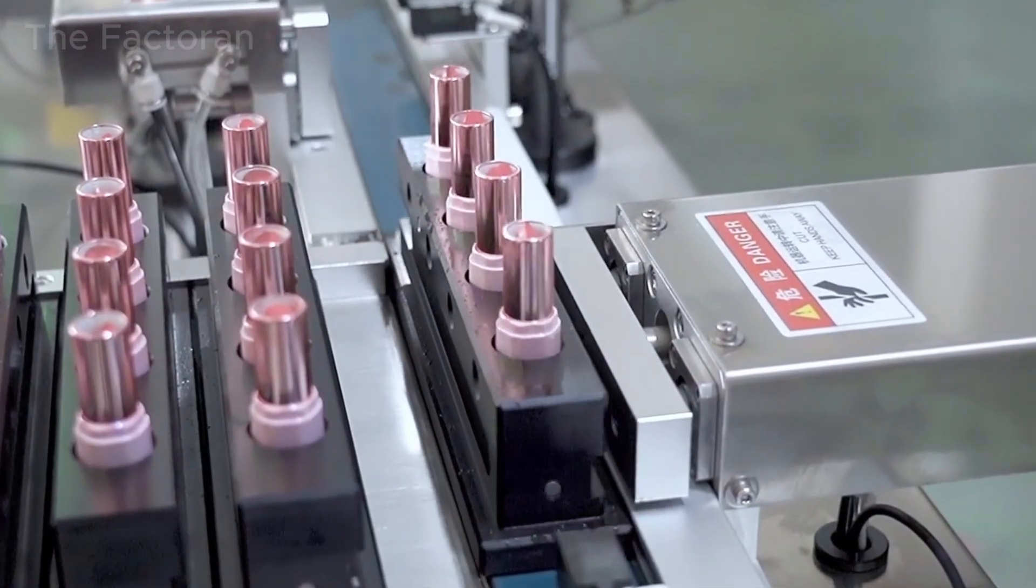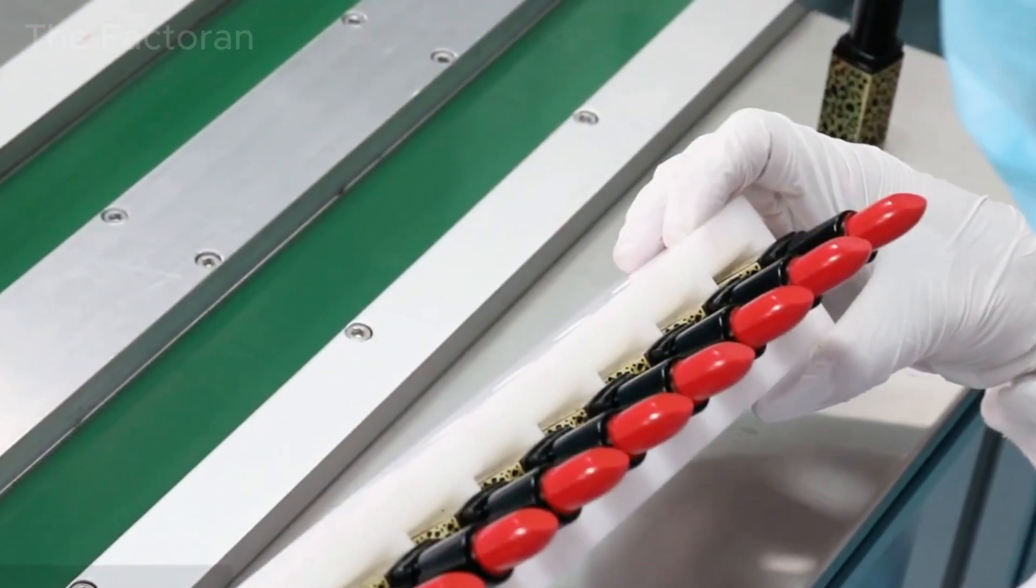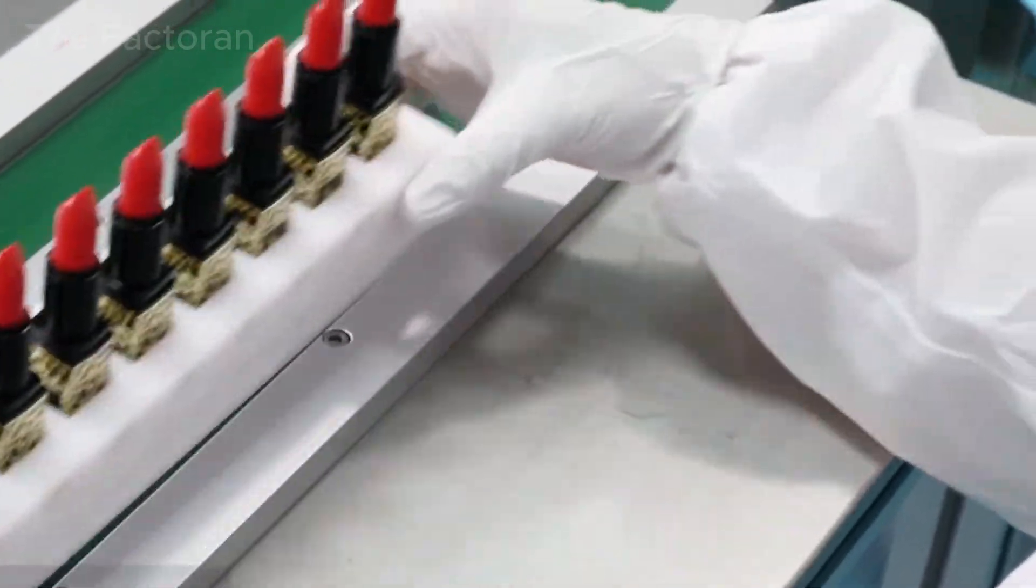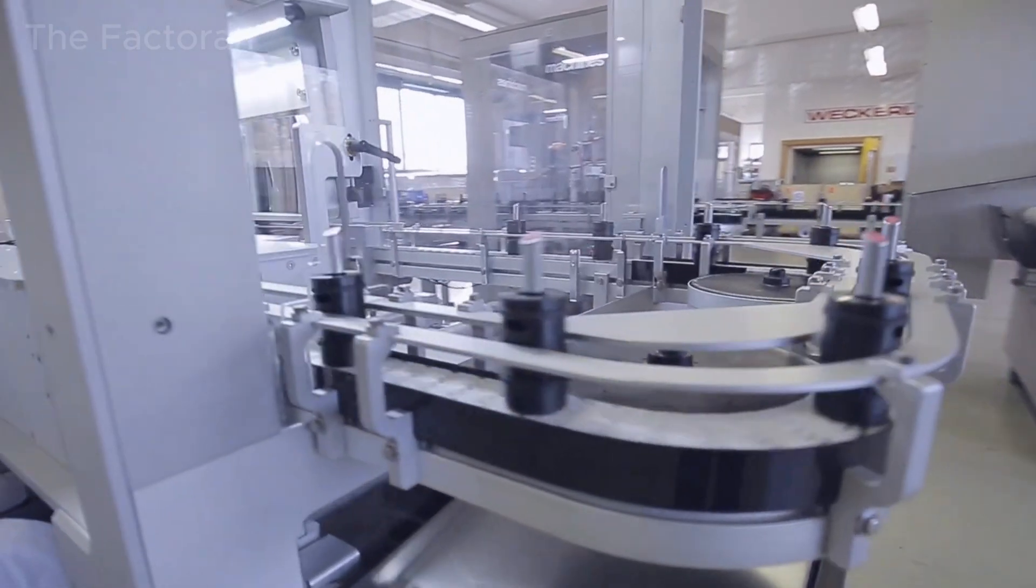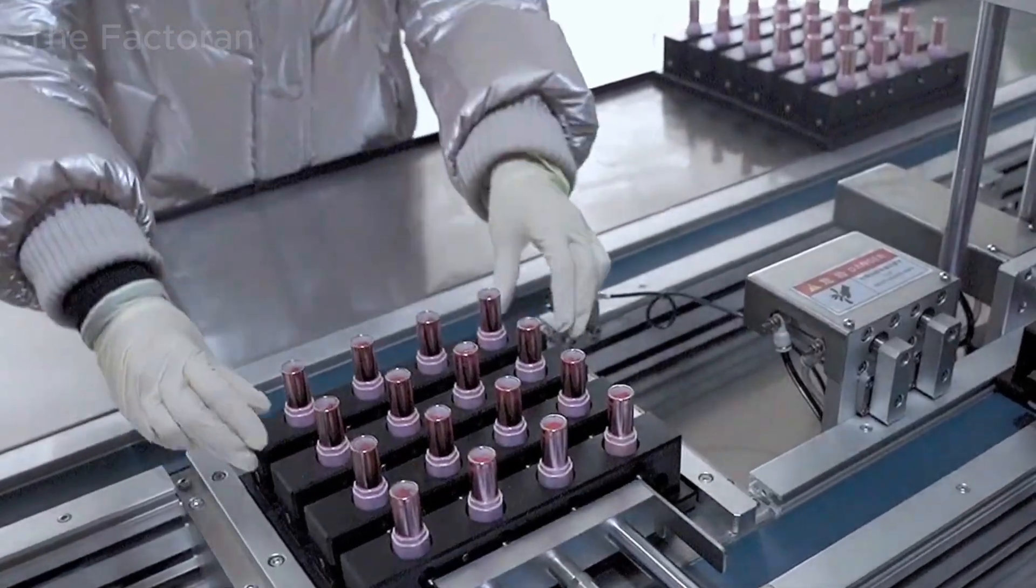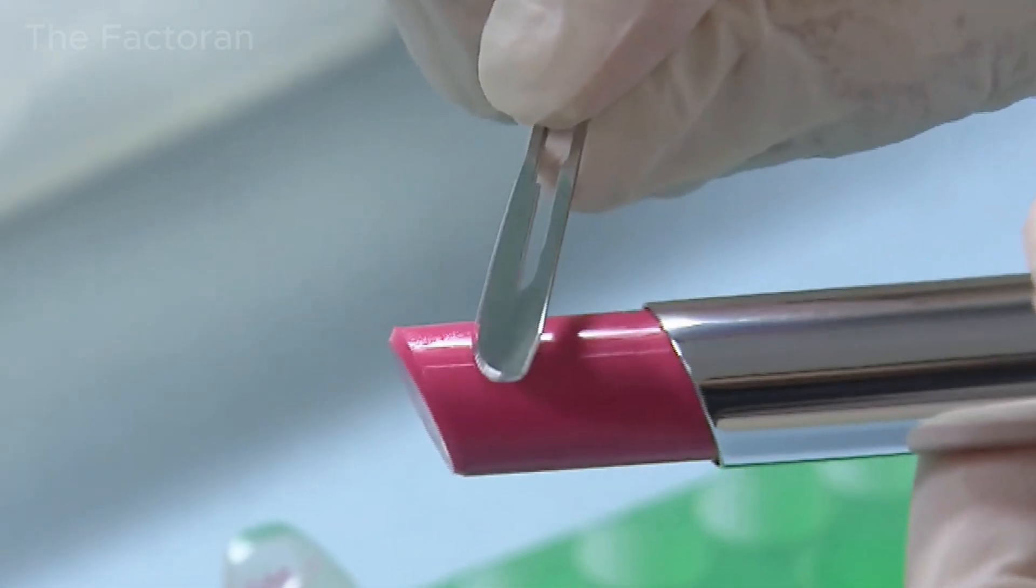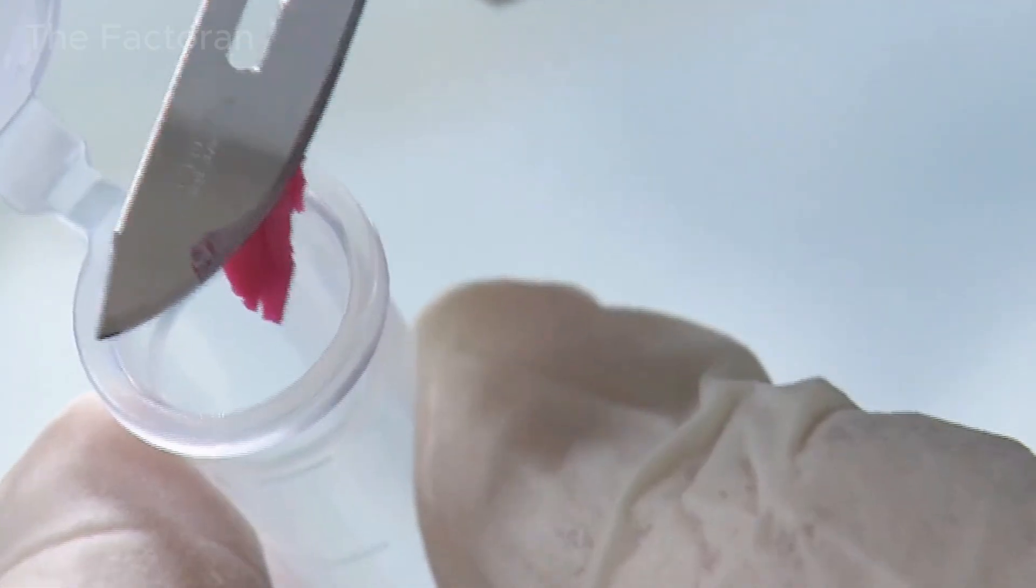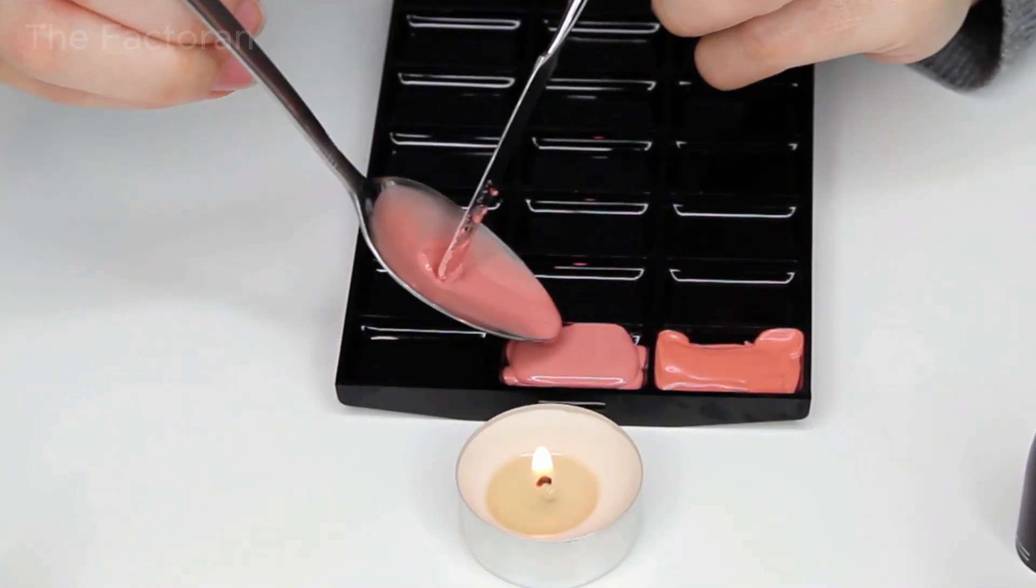Not every lipstick is allowed to leave the factory. During the quality control stage, samples are randomly taken from each production batch to evaluate stability and overall consistency. One of the most critical tests is the melting point assessment. Technicians scrape a small amount of lipstick and apply it onto a glass plate. The sample is then placed on a temperature-controlled heating element. As the temperature gradually rises.